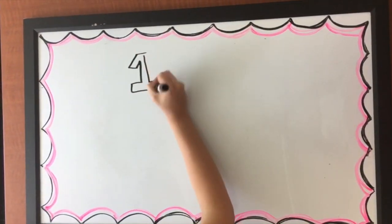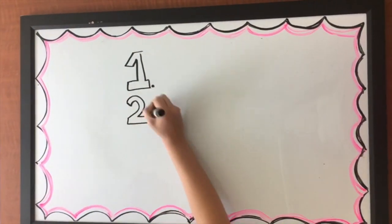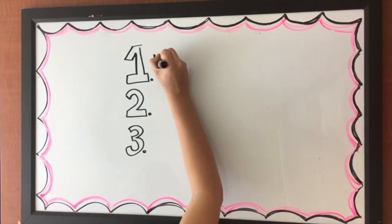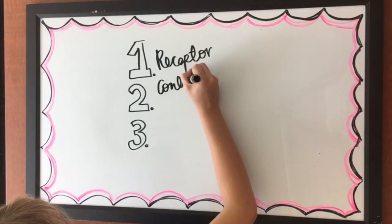Homeostatic control systems contain three individual components that control a variable within the organism. The three parts of the system include the receptor, the control center, and the effector.